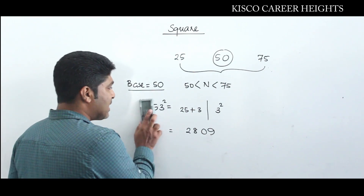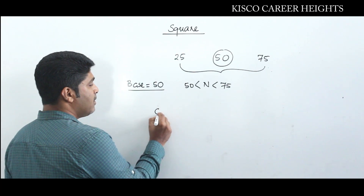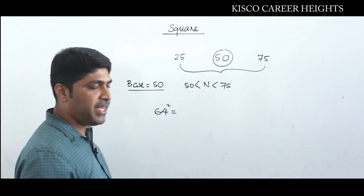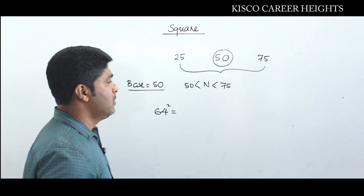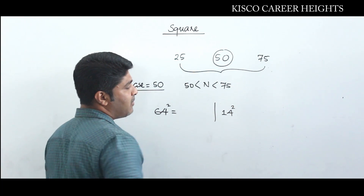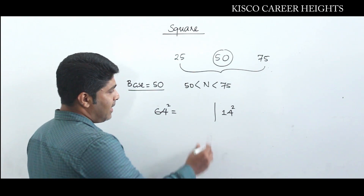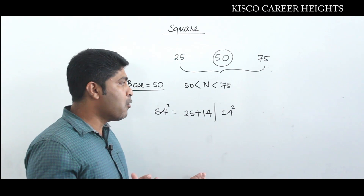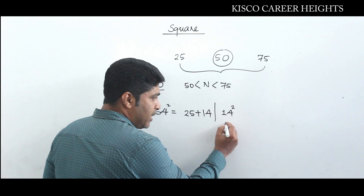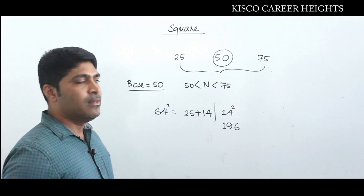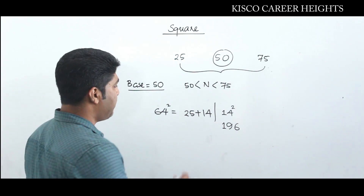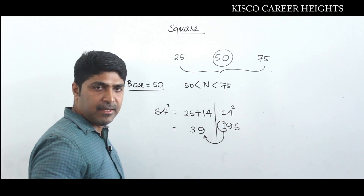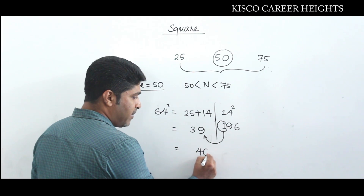Consider one more example: 64². The base is 50, so 64 is 14 more than 50 — the complementary is 14. The right side is 14² = 196, which has three digits. So we carry the 1 forward to the left side. The left side is normally 25 + 14 = 39, and adding the carry gives 39 + 1 = 40. The remaining right side is 96. Hence, 64² = 4096.